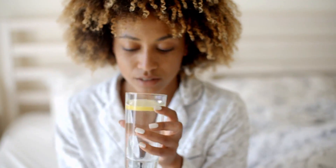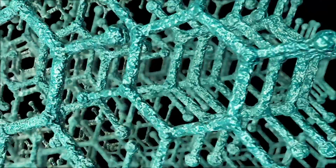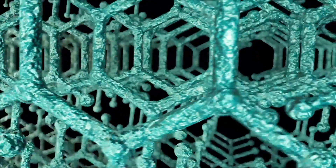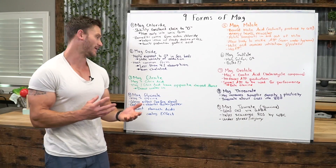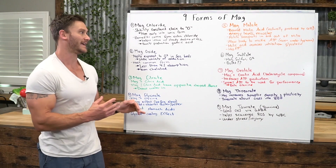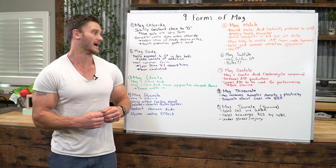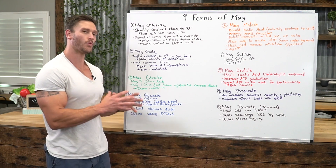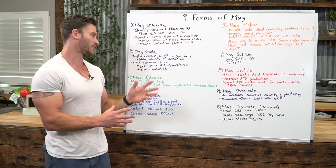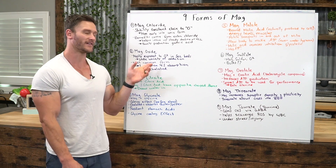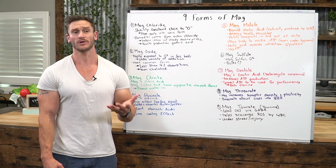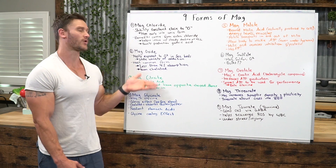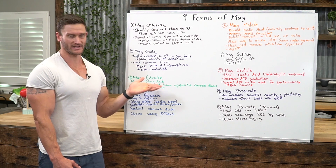It's non-chelated, which means it's not bound to an amino acid that would allow it to get into the system. You really want magnesium to be chelated with some kind of amino acid — like mag glycinate, mag threonate, or mag taurate. You want a chelated form for the most part for absorption. So you're getting very little absorption. If you go to your local pharmacy and you pick up an inexpensive magnesium, this is more likely what you're going to get.